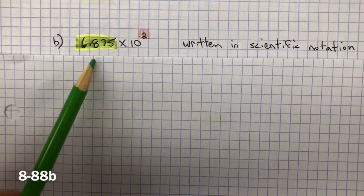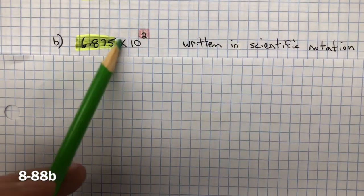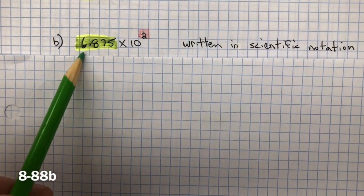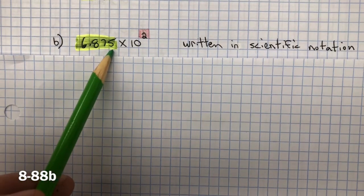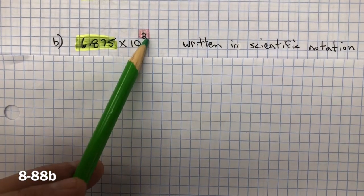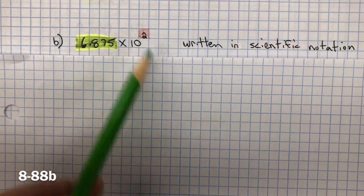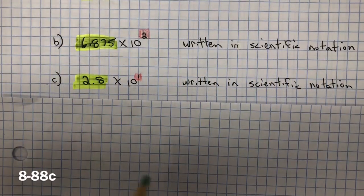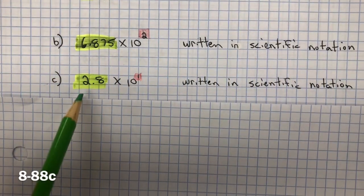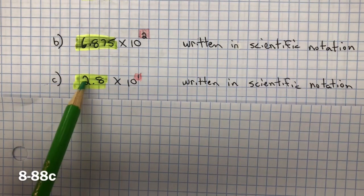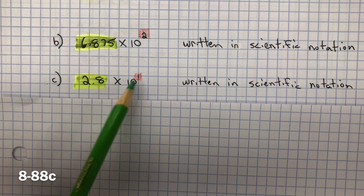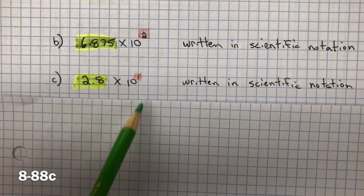B is written in scientific notation: n is greater than or equal to 1 but less than 10, because it's 6 and 875 thousandths, and we have an integer exponent — positive 2. C is also written in scientific notation: n is greater than or equal to 1 but less than 10, and the exponent is an integer.